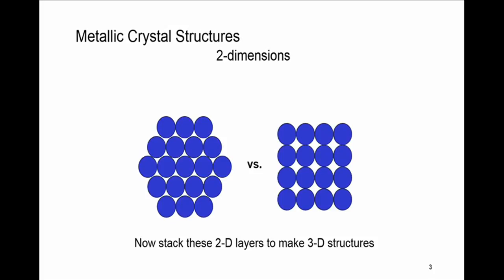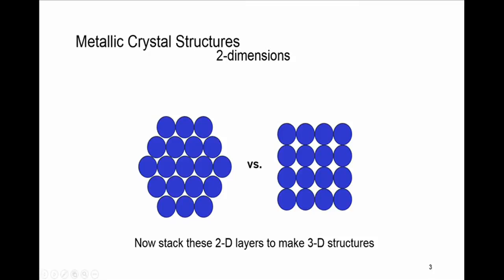We'll talk about how the crystal structure of ceramics is different from the crystal structure of metals. Materials like metals have a crystal structure which is an organized array of atoms, similar to the structures shown here. We want to see how we can stack these atomic structures on top of each other to minimize empty space, and how we can stack 2D layers to make 3D structures.